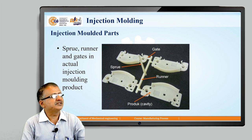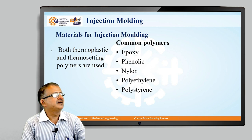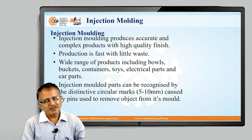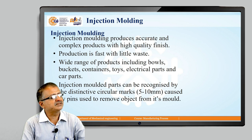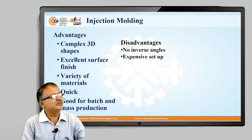It is a split mold — after attaining sufficient solidification, the part is ejected. Materials used include both thermoplastic and thermosetting materials: epoxy, phenolic, nylon, polyethylene, and polystyrene. The process is very accurate, gives a good surface finish, can produce complex parts with very little waste — net shape manufacturing. Products produced include bowls, buckets, containers, toys, electrical parts, and they are recognized by a distinctive circular mark caused by pins used to remove objects from the mold.